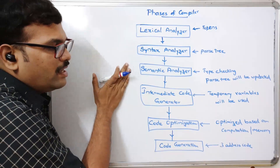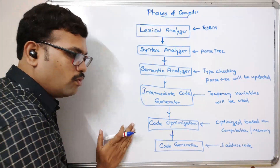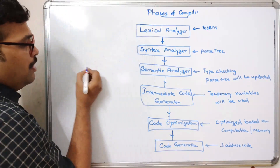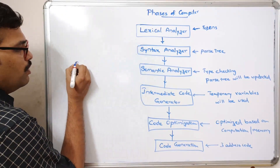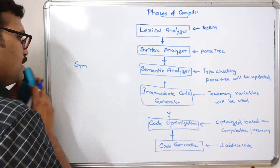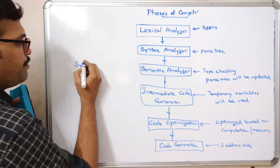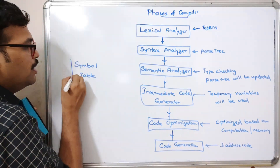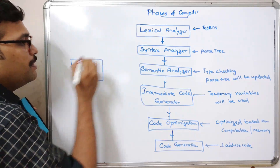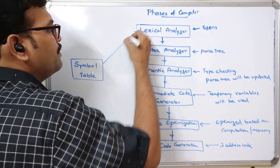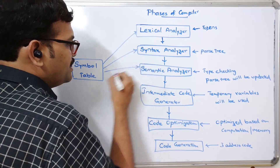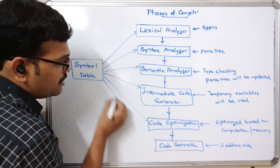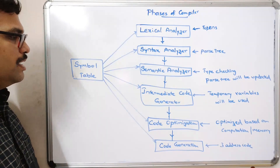The six phases are: lexical analyzer, syntax analyzer, semantic analyzer, intermediate code generator, code optimizer, and code generation. For all these phases, the input comes from the symbol table. The instructions from the symbol table are given as input to all six phases.